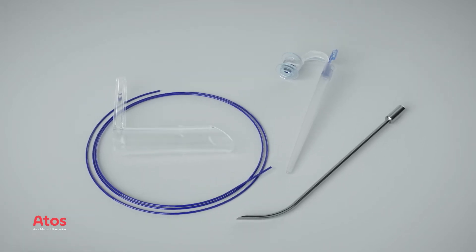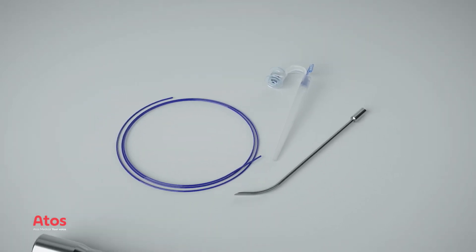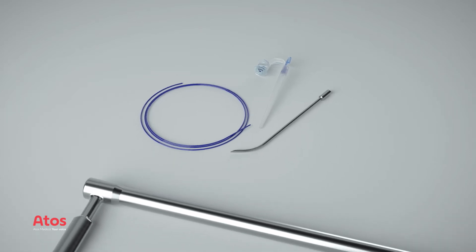The Pharynx Protector included in the Provox Vega Puncture Set is not being used during secondary puncture.